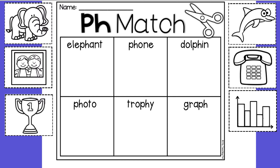Good morning, boys and girls. Today in phonics, we're going to be talking about our PH digraph. This is the digraph that we call Phoebe. Phoebe is our H sister. Phoebe likes to talk on the phone. The PH digraph says 'ph' — it sounds like the letter F, but it is the PH put together to make the one sound 'ph'.